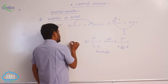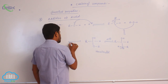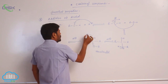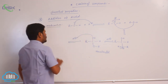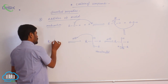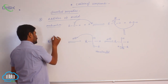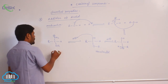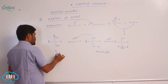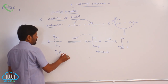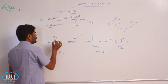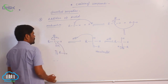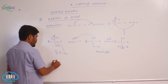This hemiacetal again reacts with an acid — H plus. The OH group gets protonated, giving a species with a positive charge and an OR group. This again reacts with an alcohol molecule. Loss of a water molecule takes place, and the alcohol attacks on the carbocation formed.